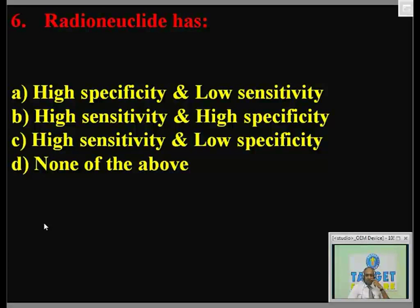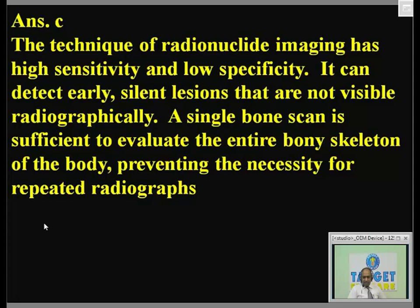Radionuclide imaging: the question asks whether it has high specificity and low sensitivity; high sensitivity and high specificity; high sensitivity and low specificity; or none of the above. Radionuclide imaging has high sensitivity but low specificity — it can detect early silent lesions but cannot completely characterize them on the radiograph, hence we say it has low specificity.